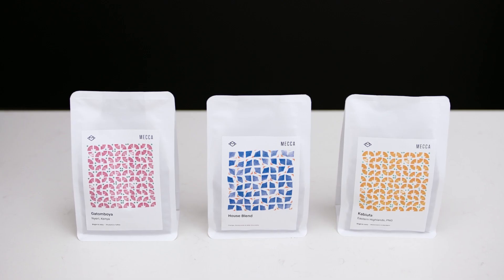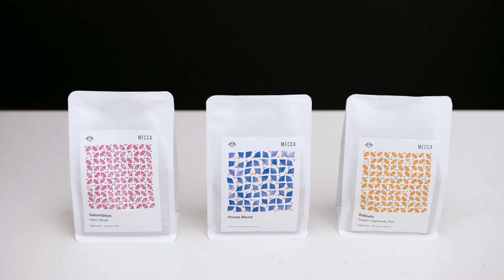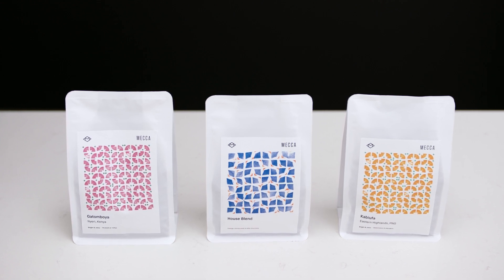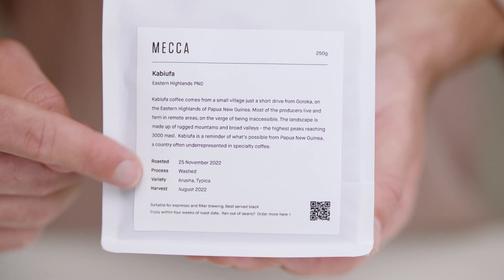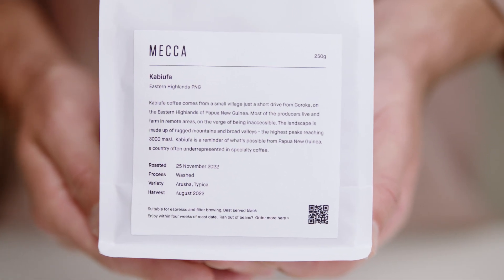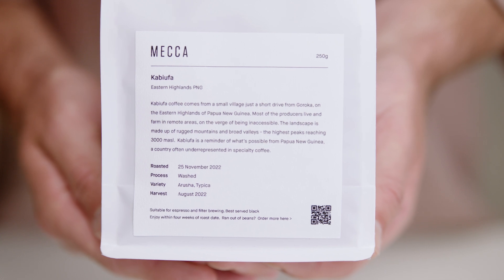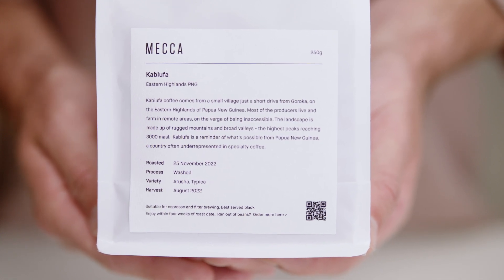To ensure you get the best possible tasting cup, always look for beans with a roasted on date so you know exactly how fresh they are. Five to 30 days out of roast is the sweet spot. If there's only a use by or best before date, you can't tell if they're fresh or not.